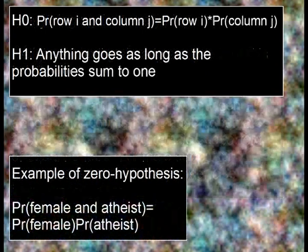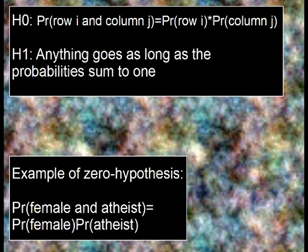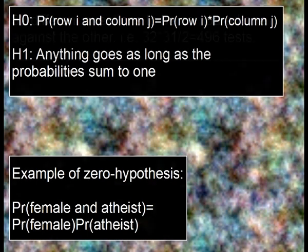A quick reminder: H0 is the hypothesis that the probability of being in row I and column J is the probability of row I times the probability of column J — that is independence — while H1 is everything else. For more, see the previous clips.